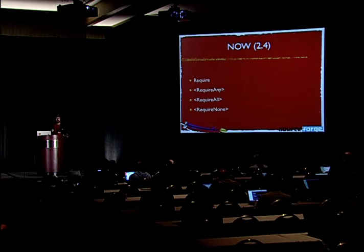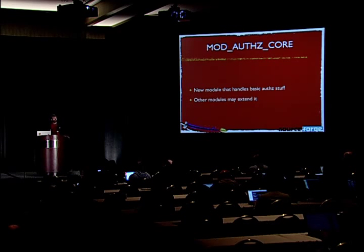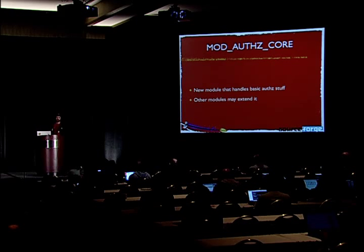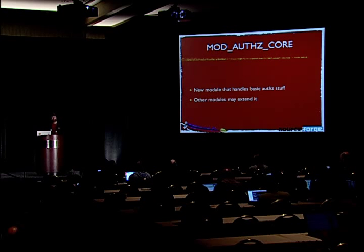In 2.4, there are a couple of new keywords. The require keyword is still around but much more flexible, and three new sections have been introduced: RequireAny, RequireAll, and RequireNone — which mean exactly what they say. The directives are defined in a module called mod_authz_core. If you look at a list of Apache modules, you'll see some start with mod_authn (for authentication) and some with mod_authz (for authorization). Then there's the special case mod_authnz_ldap, which handles both, because LDAP is a special case.